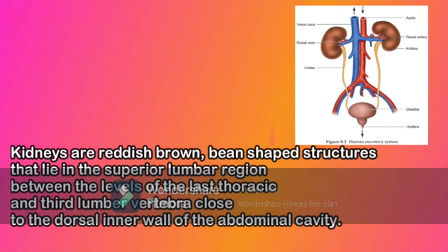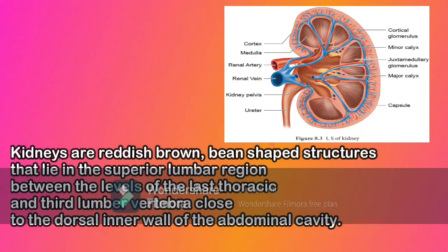The longitudinal section of the kidney shows an outer cortex, inner medulla, and pelvis. The medulla is divided into a few conical tissue masses called medullary pyramids or renal pyramids. The part of cortex that extends in between the medullary pyramids is the renal columns. The center of the inner concave surface of the kidney is a notch called the renal hilum, through which urinary blood vessels and nerves innervate. Inner to the hilum is a broad funnel-shaped space called the renal pelvis, with projections called calyces.